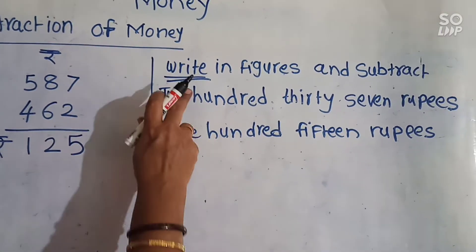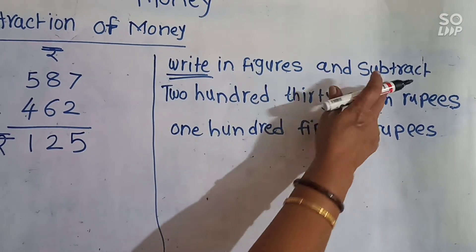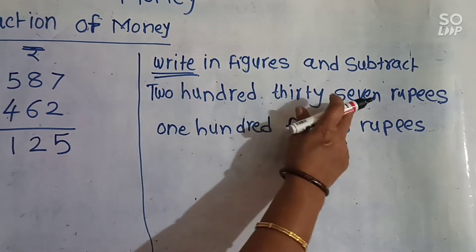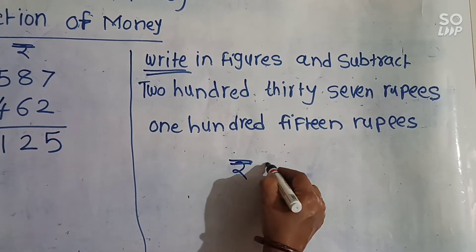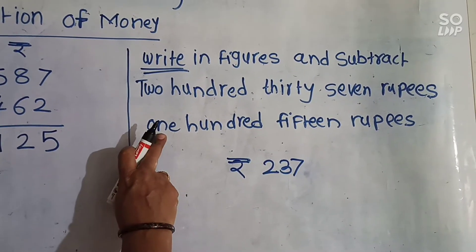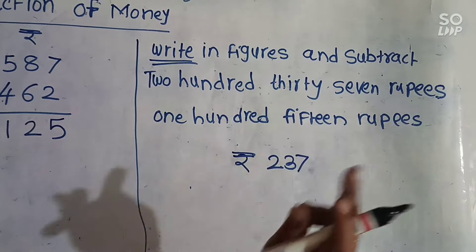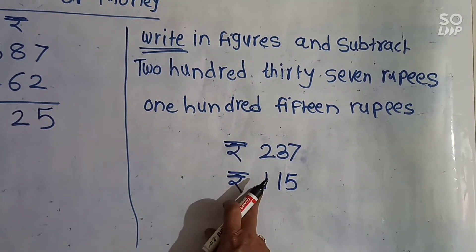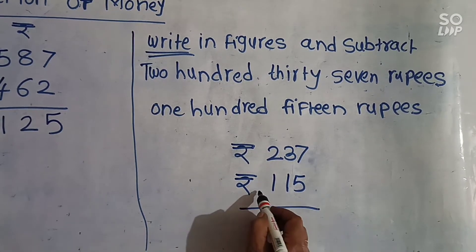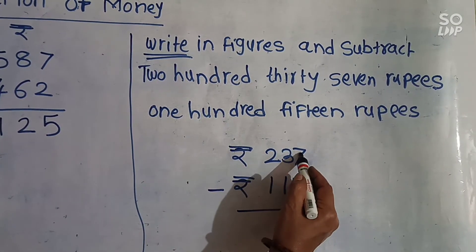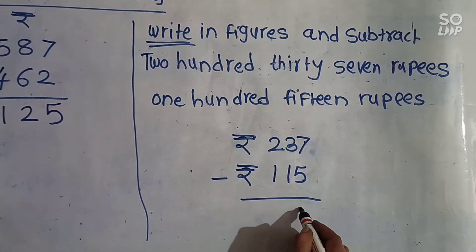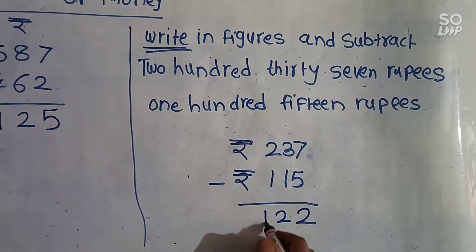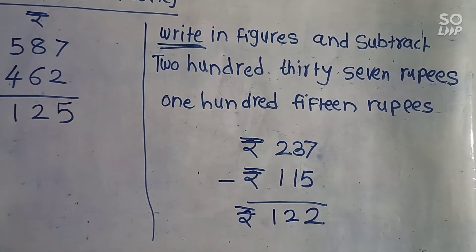Here is the next example. Write in figures and subtract. Okay. Here the amount is given in words: 237 rupees, and we have to subtract 115 rupees. Ones place: 7 minus 5 equals 2. Tens place: 3 minus 1 equals 2. Hundreds place: 2 minus 1 equals 1. So the answer is rupees 122.